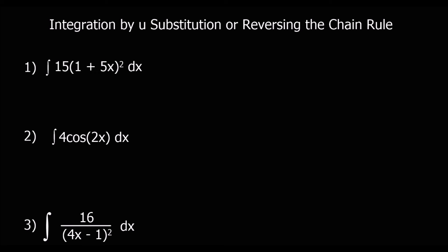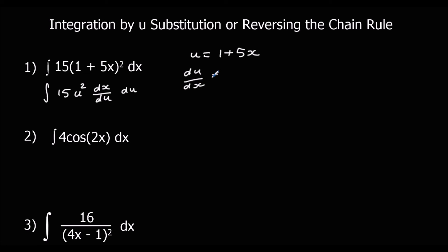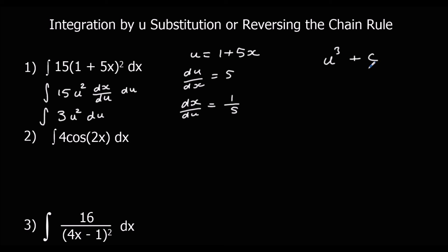Another set of questions — pause the video, give it a go, and press play when you're ready to go through the answers. For the first one, u is 1 plus 5x, giving us the integral of 15u squared times dx/du with respect to u. du/dx is 5, so dx/du is one fifth. 15 times one fifth is 3, so we integrate 3u squared with respect to u. That gives u cubed plus c, and changing u back: (1 plus 5x) cubed plus c.